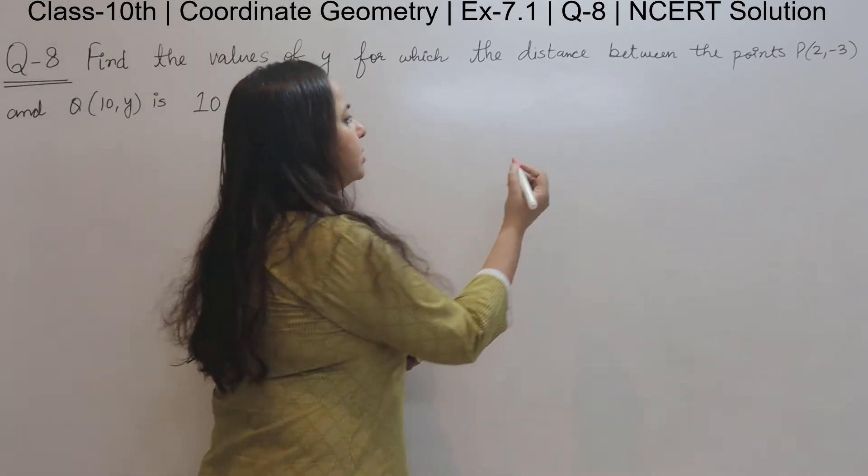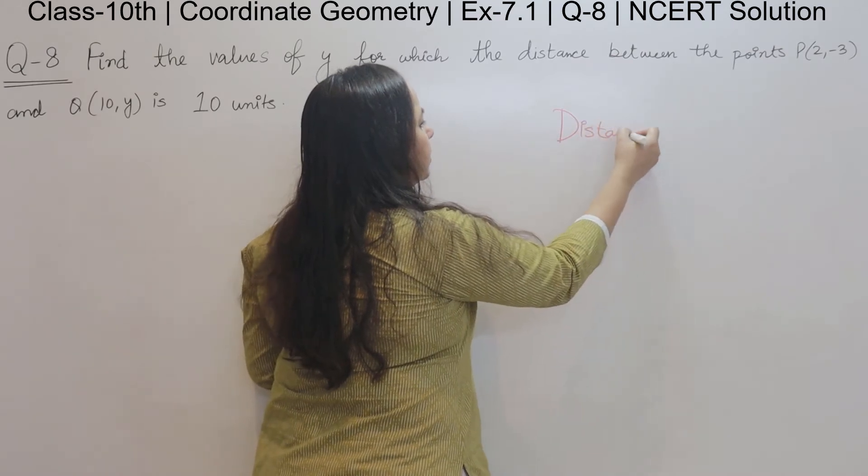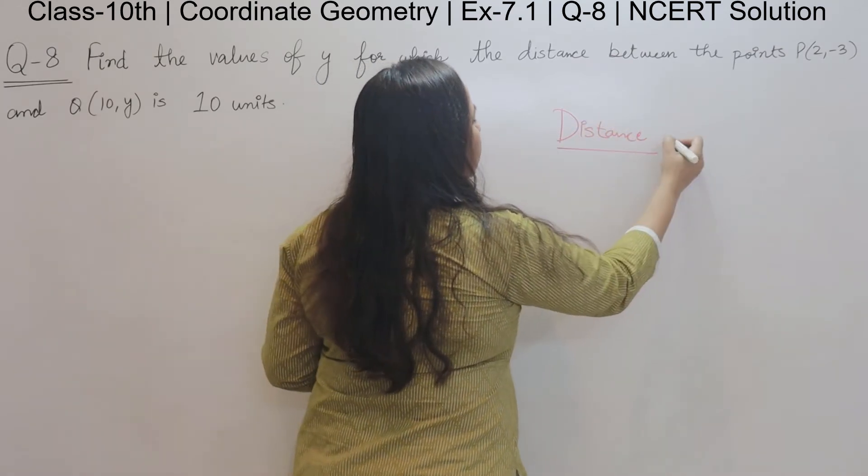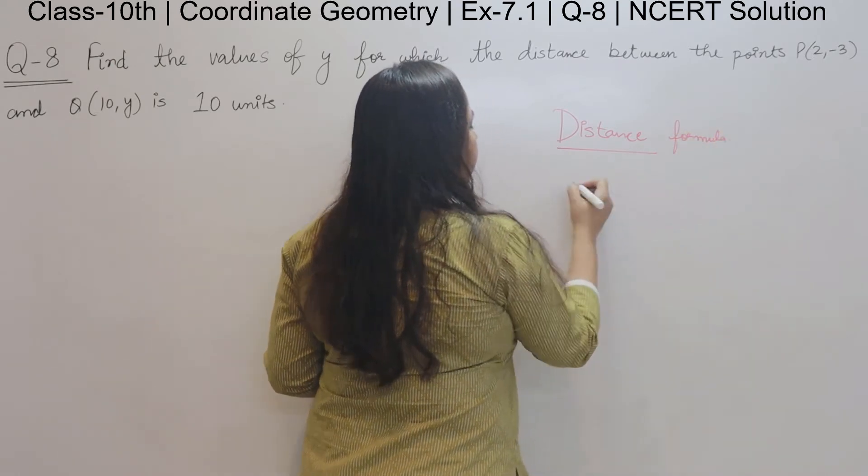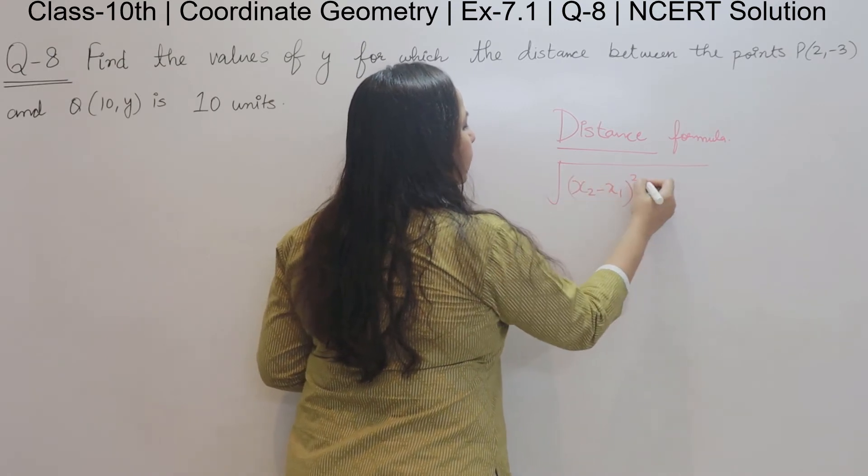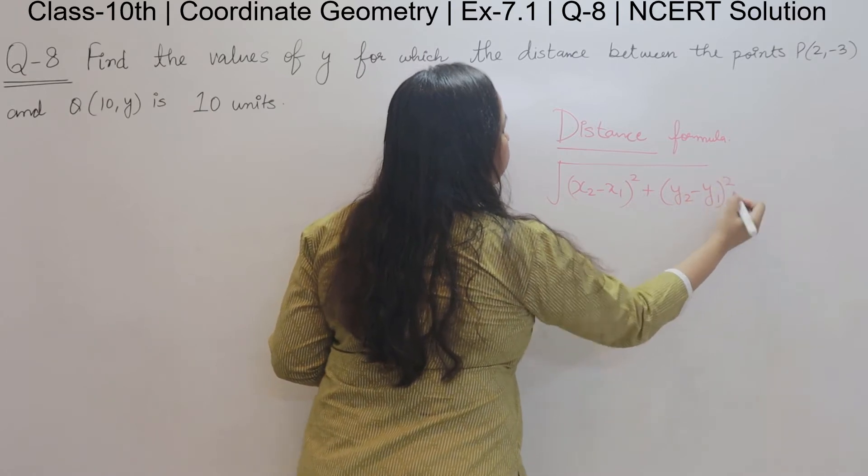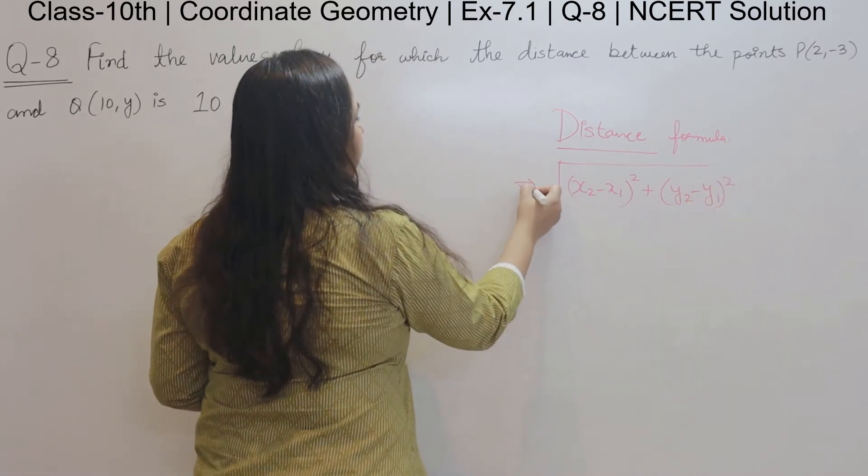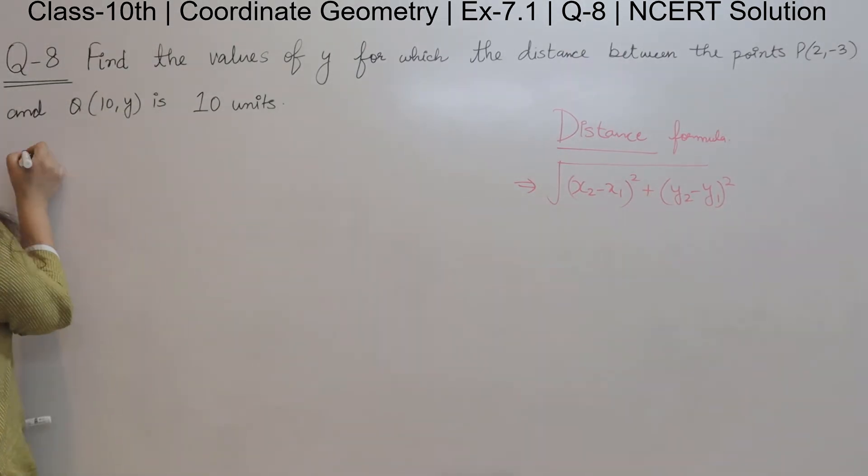As you already know, the distance formula is under root x2 minus x1 whole square plus y2 minus y1 whole square. So this is the distance formula and the distance between P and Q. Solution starts now.